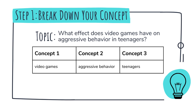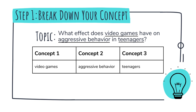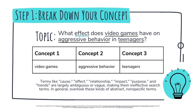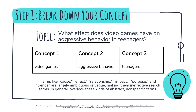In our example, we have three concepts in our topic statement: video games, aggressive behavior, and teenagers. You'll notice that we didn't include the word 'effect' in our search terms, even though it's part of the topic. Terms like cause, effect, relationship, impact, purpose, and trends are largely ambiguous or vague, making them ineffective search terms. In general, overlook these kinds of abstract, non-specific terms.